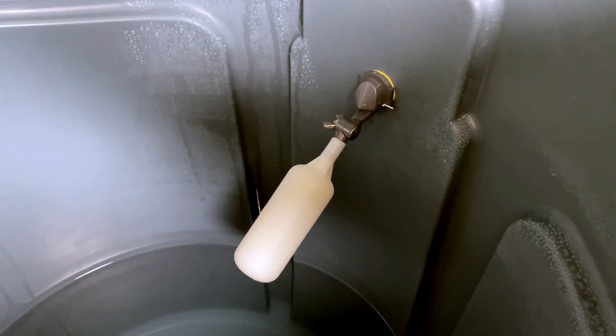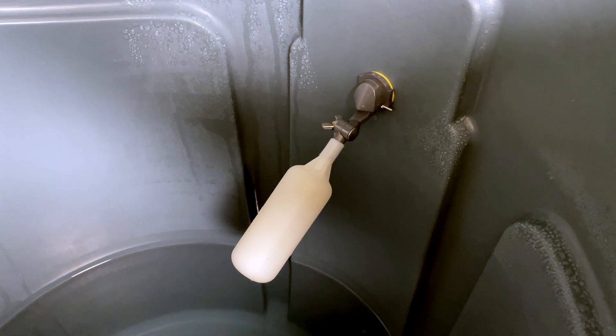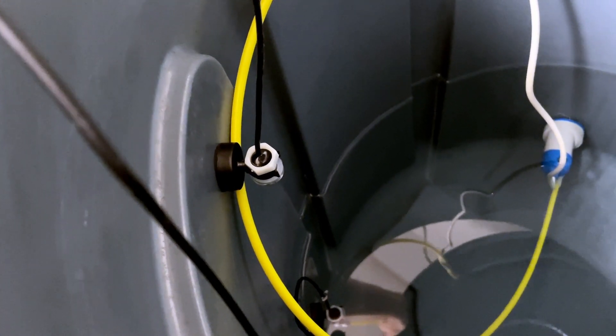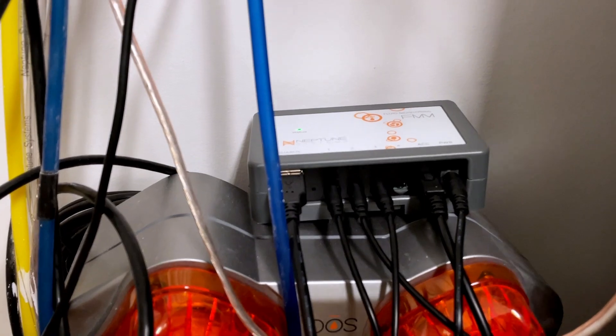So here's what the float valve looks like inside. I also have two optical sensors in my Brute, a low-level sensor and a high-level sensor. The optical sensors as well as the solenoid are both connected to an Apex FMM module.